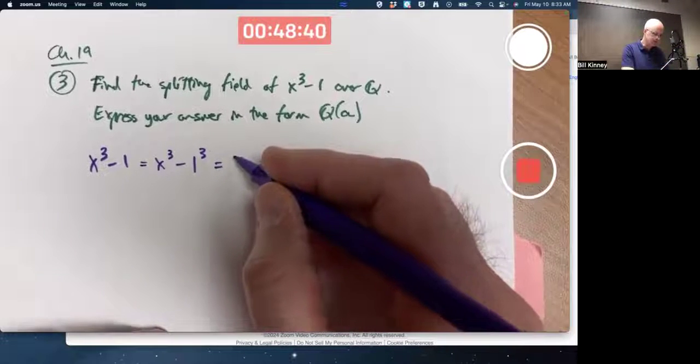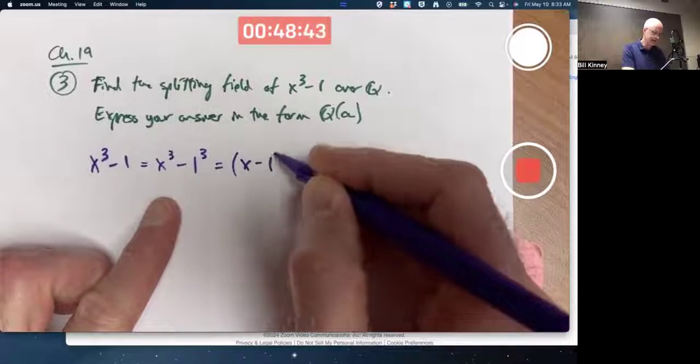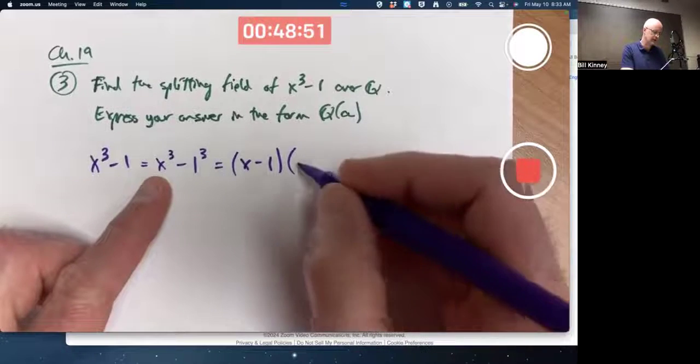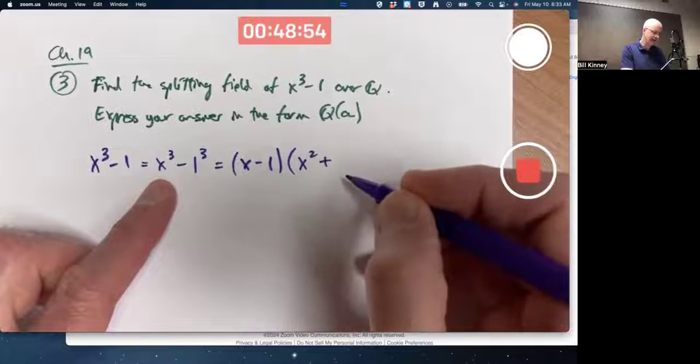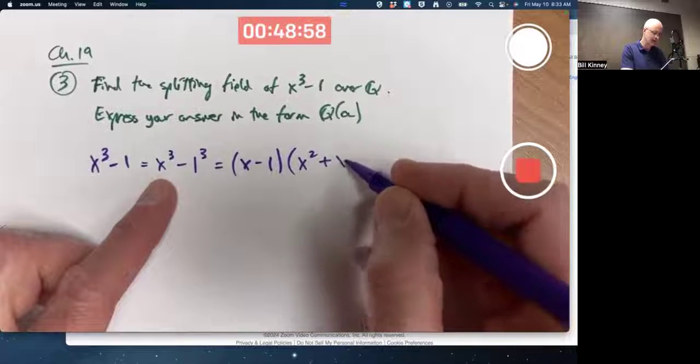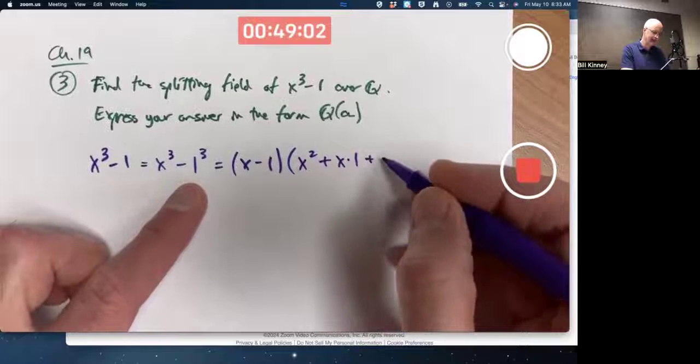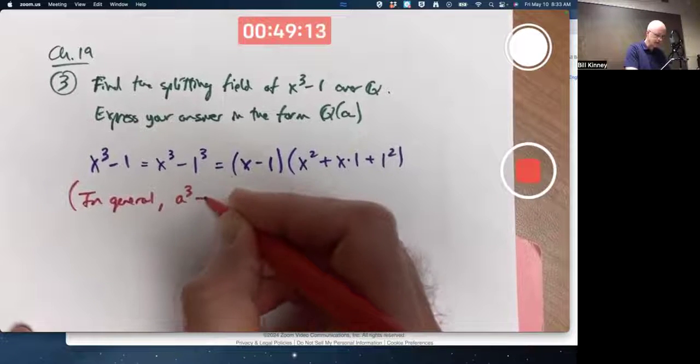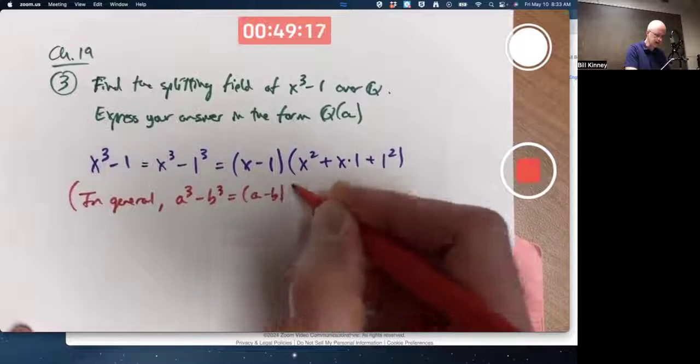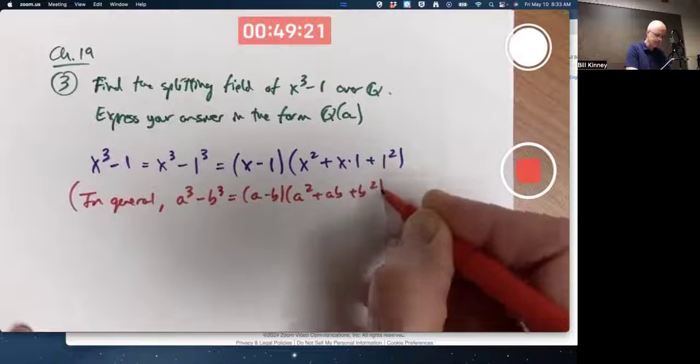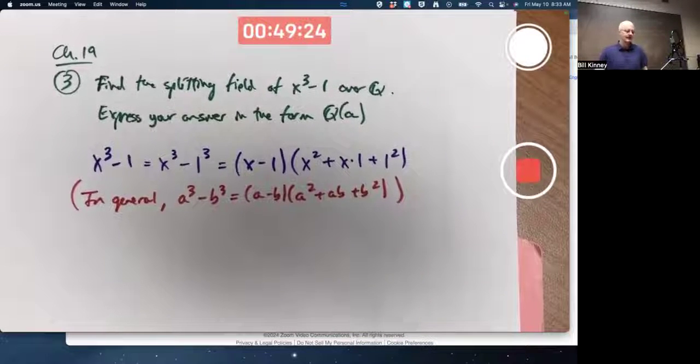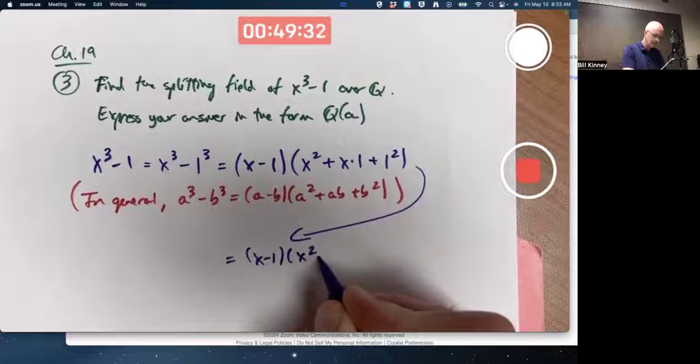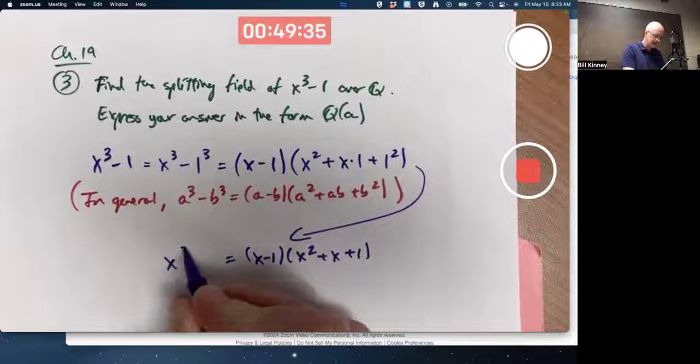You can always factor the difference of two cubes as the first thing minus the second thing, without cubes, times a trinomial, where the first thing that's being cubed gets squared. Then you add the product of the first thing and the second thing, x times 1, and then add the last term squared. In general, if your difference of two cubes is a³ - b³, you can write that as (a - b)(a² + ab + b²). Anyway, coming back to the example at hand, just simplify a tiny bit. That means x³ - 1 can be factored like this.